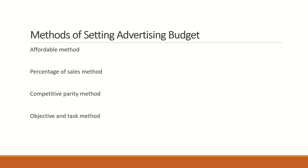There are four methods of setting advertising budget. First one is the affordable method. Second one is the percentage of sales method. Third one is the competitive parity method. And fourth one is the objective and task method.